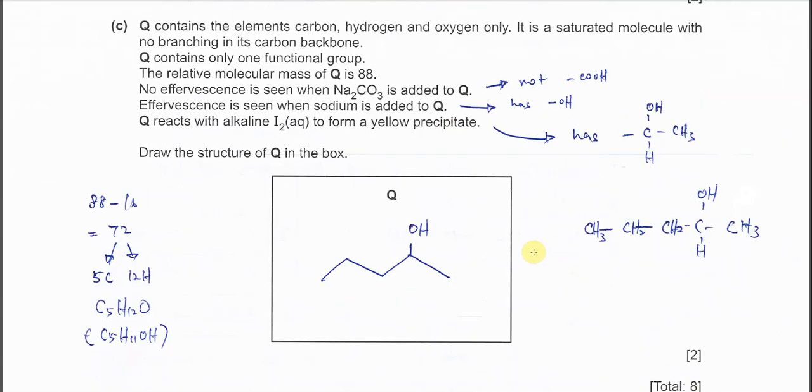Q contains the elements carbon, hydrogen and oxygen only. It is a saturated molecule with no branching in its carbon backbone. No branch.